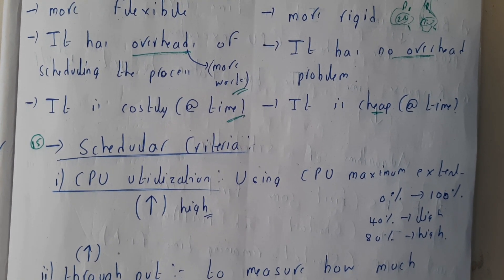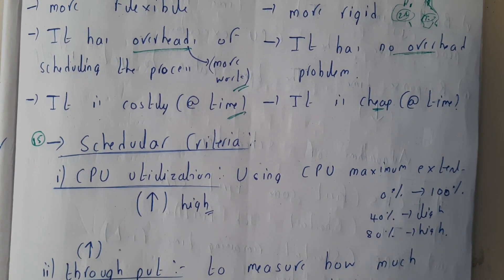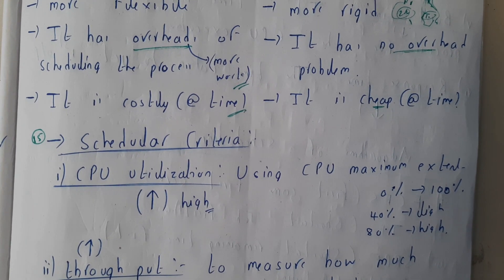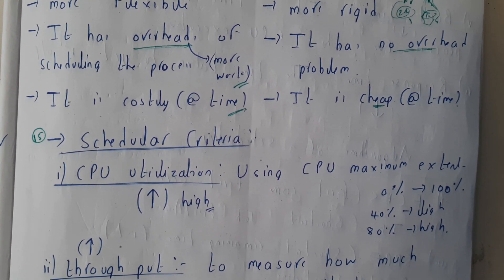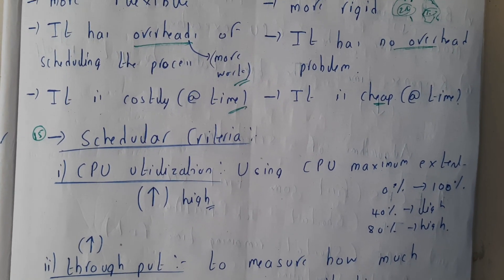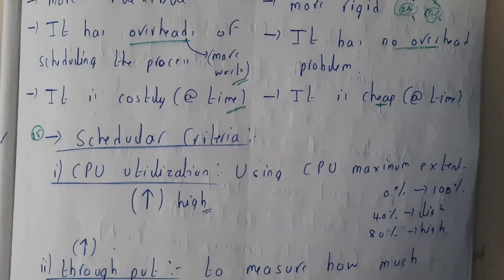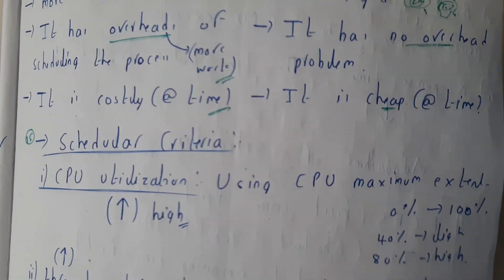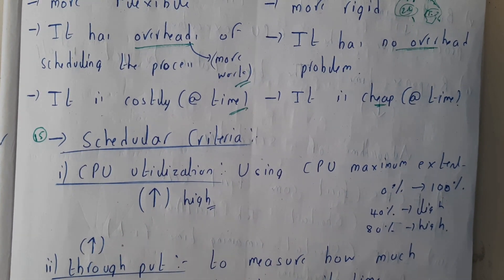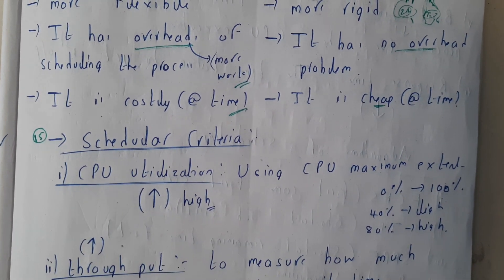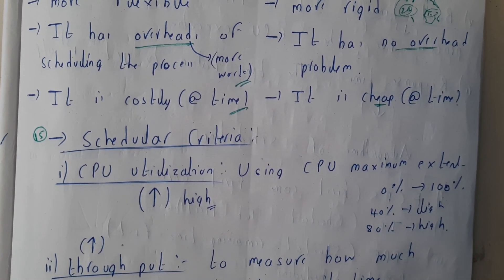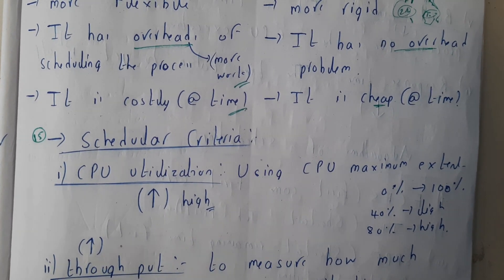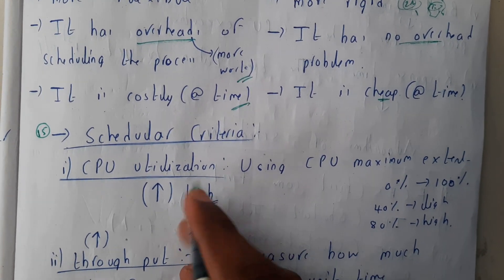Hello guys, we are back with our next tutorial. In this tutorial, let us go through scheduler criteria. We have already discussed schedulers, so in the next tutorial we'll be going through some types of schedulers and algorithms. Basically, what are the things that a scheduler or the CPU should do? There are six criteria.